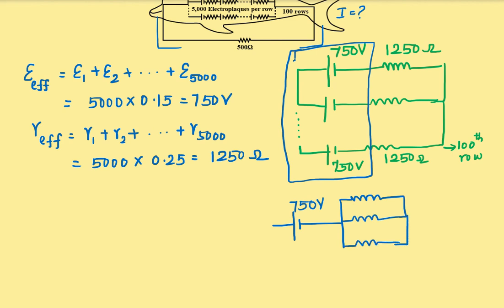And there are 100. So each one is 1250Ω. This is the equivalent circuit of this one.